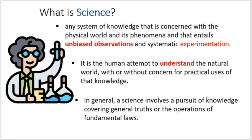As I said, aside from science as a body of knowledge, science is also a system of knowledge that is concerned with the physical world and its phenomena that entails unbiased observation and systematic experimentation. We can see that science can be a body of knowledge or a system of knowledge. There are so many concepts today that we learn through the result of experimentation. Science is a human attempt to understand the natural world without concern of practical uses of that knowledge. This is the major difference of science to technology, which we will talk about later. In general, science involves a pursuit of knowledge covering general truths or the operations of fundamental laws.